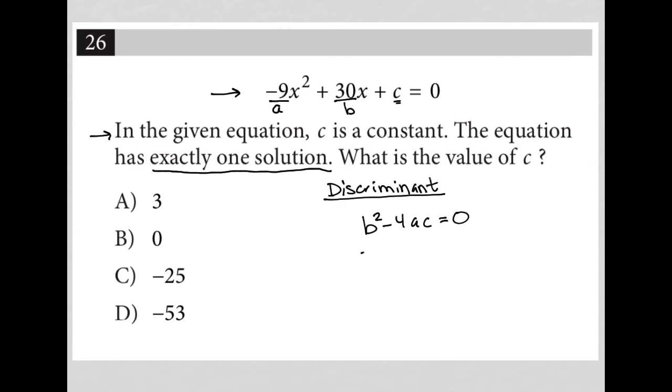Again, B is 30, so I'd have 30 squared minus 4A was negative 9, so I'll plug that in. And of course, c is what we're looking for. But we do know that we want that to be equal to zero.